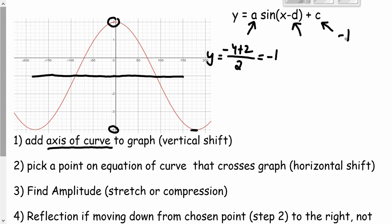Part two says pick a point on equation of the curve. So on our equation of the curve, we want to pick a point that crosses the graph, and that's called the horizontal shift. On our graph, we have two options. There's an option right here, and there's an option right here. That's because we can write this equation in two different ways, which will produce the same graph.